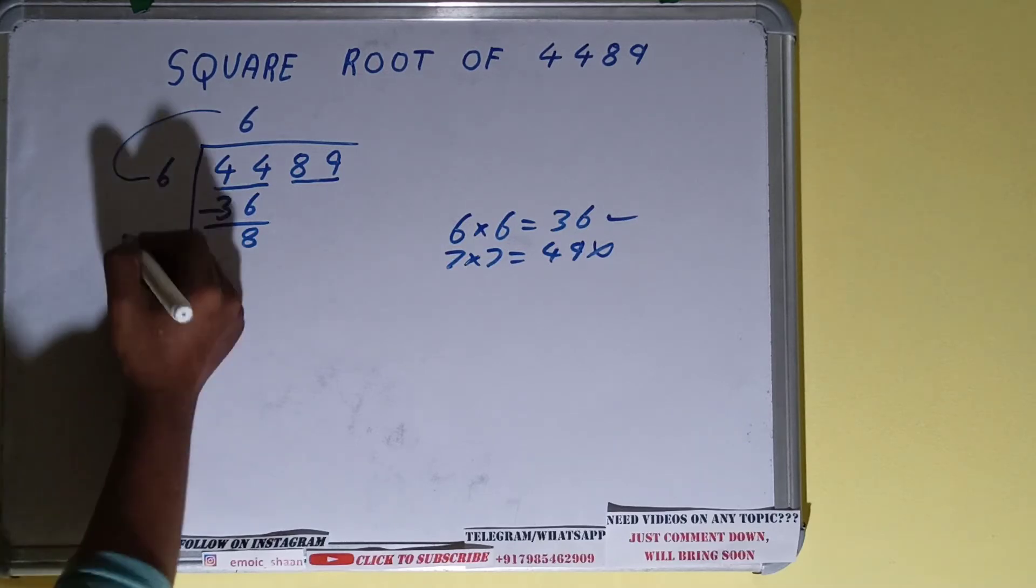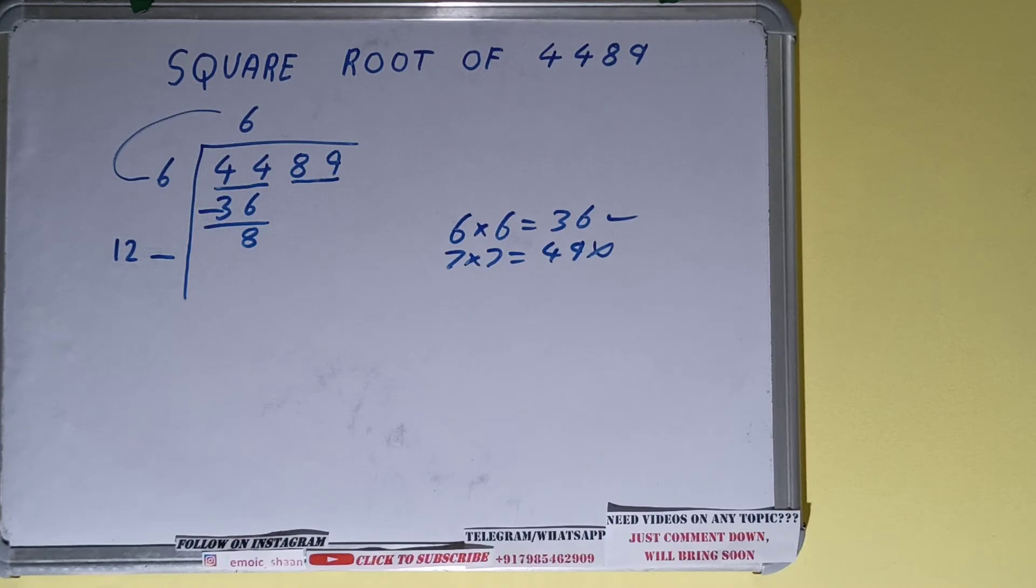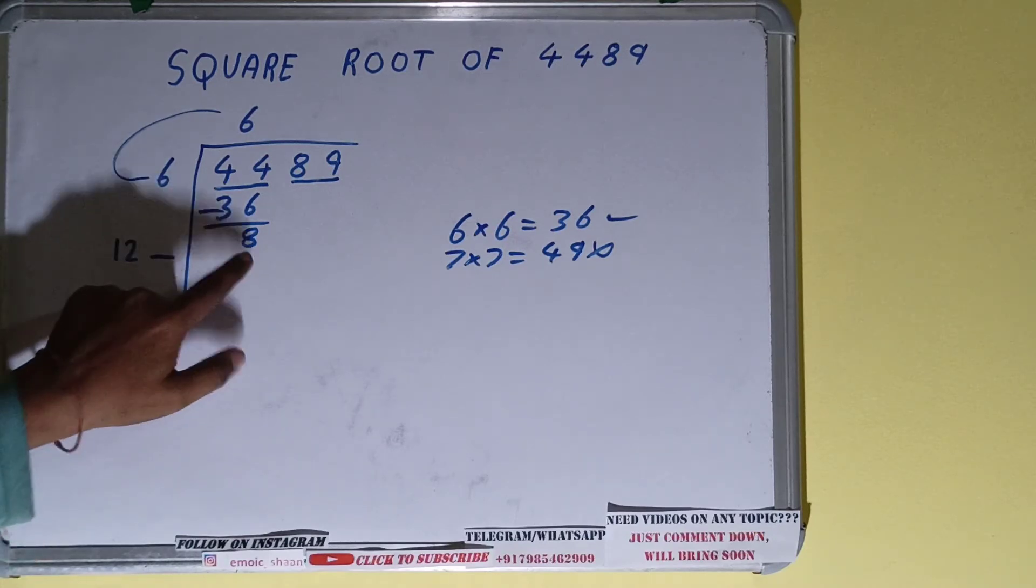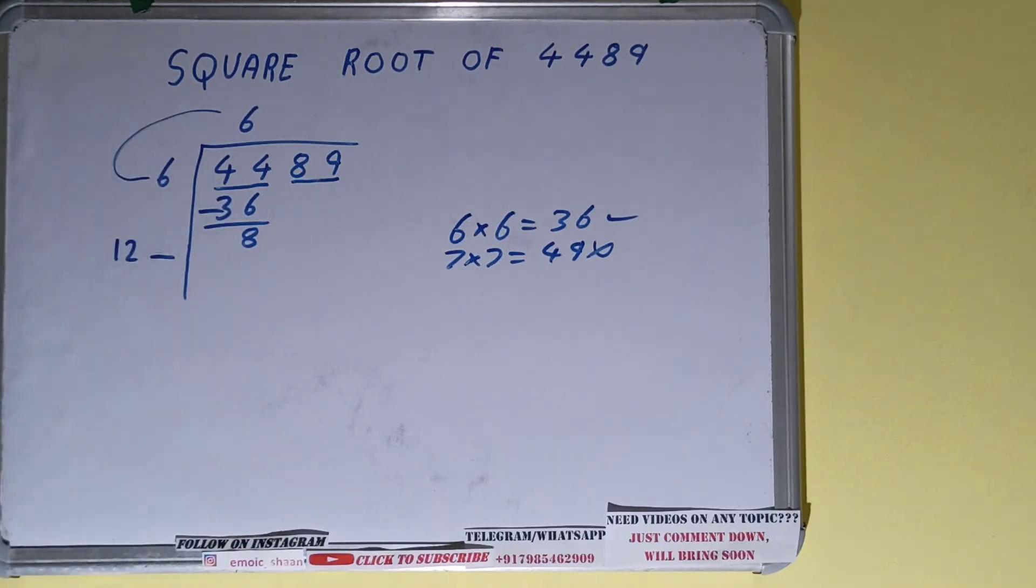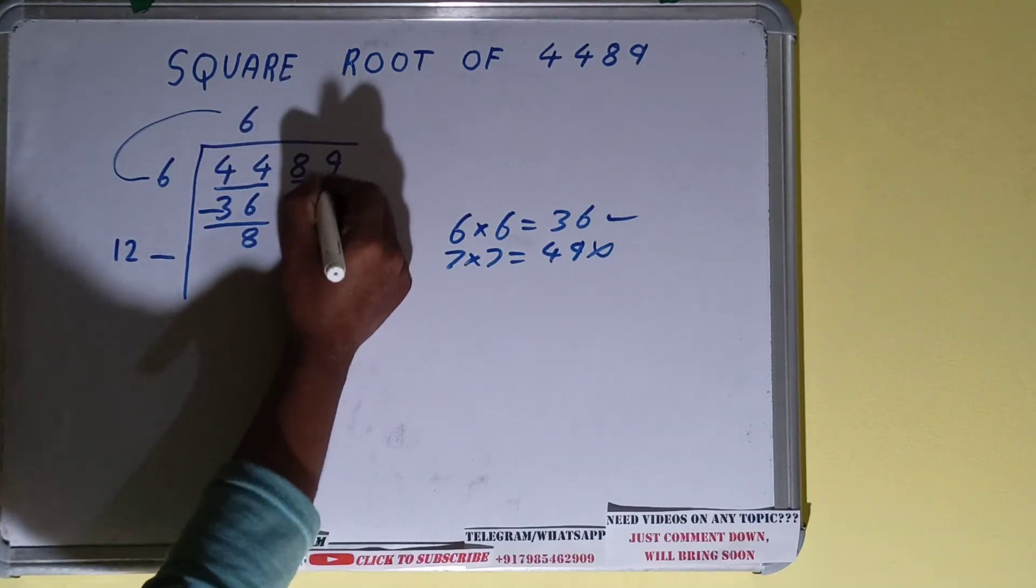Now whatever is your divisor, add it with what you multiplied with. You did 6 into 6, right? So add both. So 6 plus 6 will be 12. Keep one digit extra.